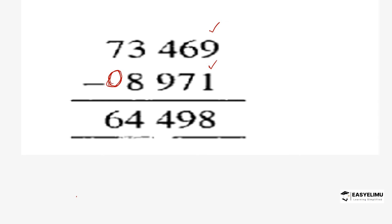You don't have to write the zero — I include it just to make it look nice. Start the subtraction process from the farthest right going left. 9 minus 1 is 8. Then 6 minus 7: 6 is less than 7, so there is trouble — you need to borrow 1 from the next digit. When you borrow from one digit to another, it goes as 10. Borrowing 1 from 4 makes 4 become 3, but it comes to the 6's column as 10, making it 16. So 16 minus 7 is 9.